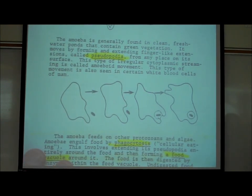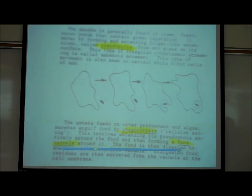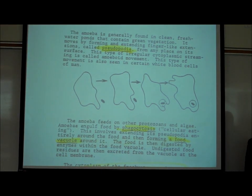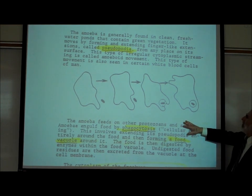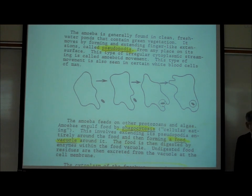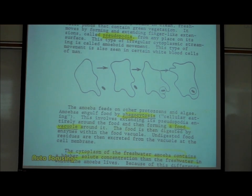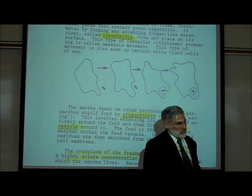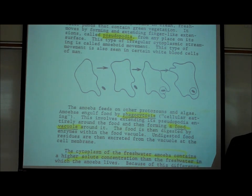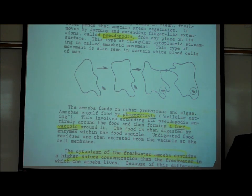Amoebas feed on bits of food in pond water. They extend their pseudopods out and carry on phagocytosis — swallowing up food and forming a food vacuole around whatever they've taken in. Since amoebas live in freshwater ponds, this creates a significant problem related to osmosis.